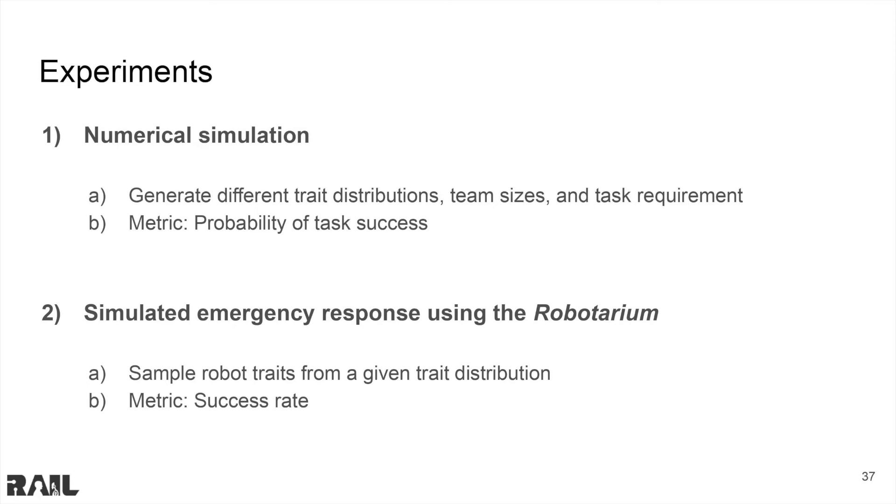In this experiment, we have a heterogeneous robot team with a given trait distribution, team size, and task requirement. We sample robots from their trait distributions, assign them to tasks, and simulate the tasks. We then count how many times the tasks succeed and fail.